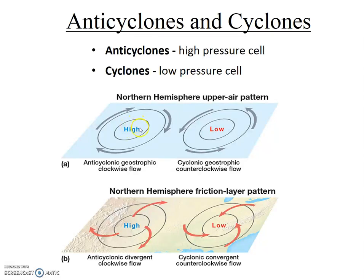Let's review the diagrams. In a high pressure system, or an anticyclone, in the upper atmosphere we're only dealing with the pressure gradient and the Coriolis effect, and the resulting winds are what we call clockwise geostrophic flow. Down closer to the surface of the Earth, friction is involved, which reduces the Coriolis effect, and essentially the pressure gradient overwhelms the Coriolis effect, and we have what's called divergent clockwise flow.